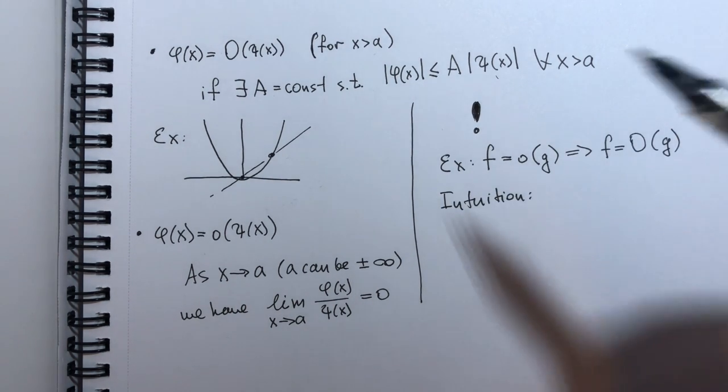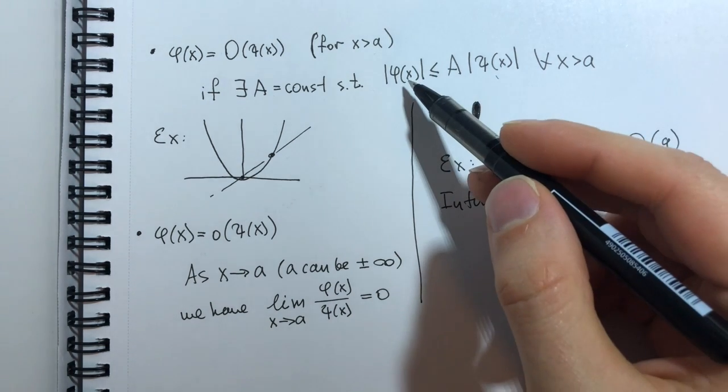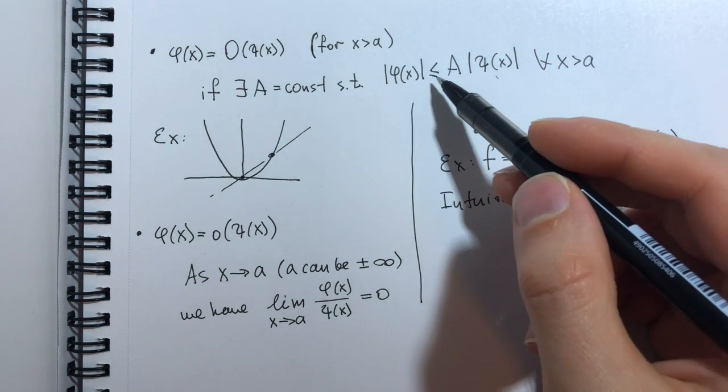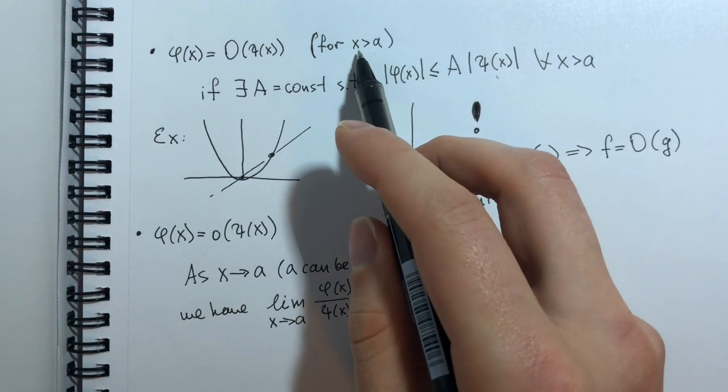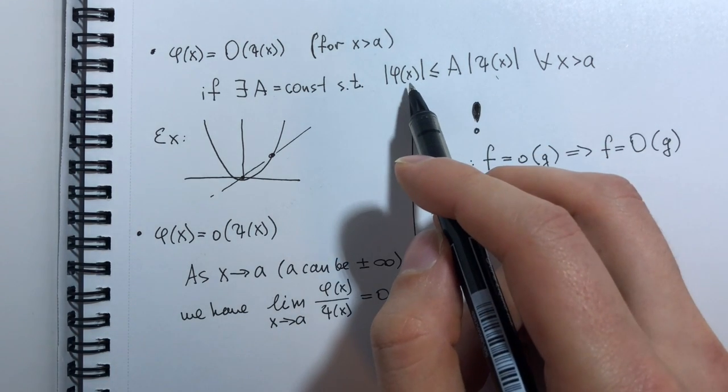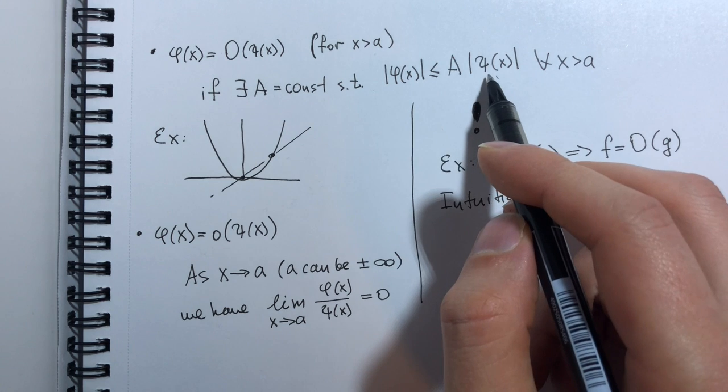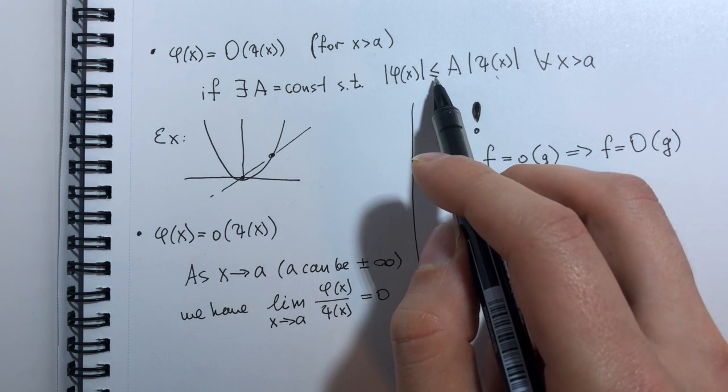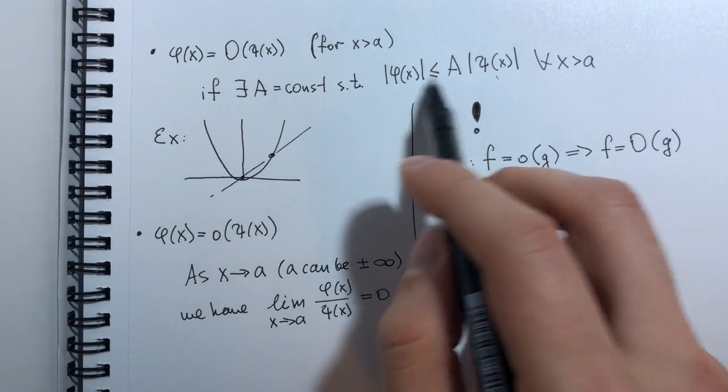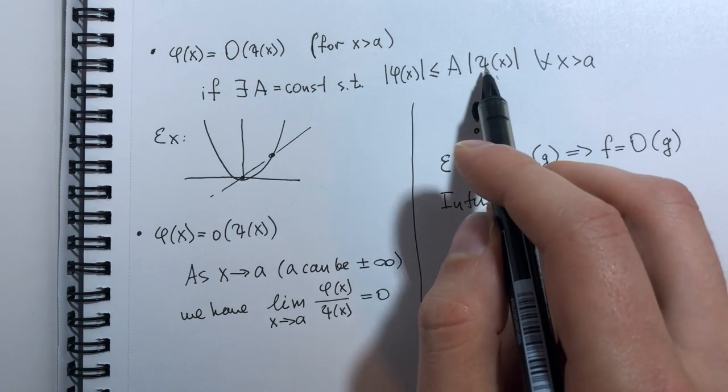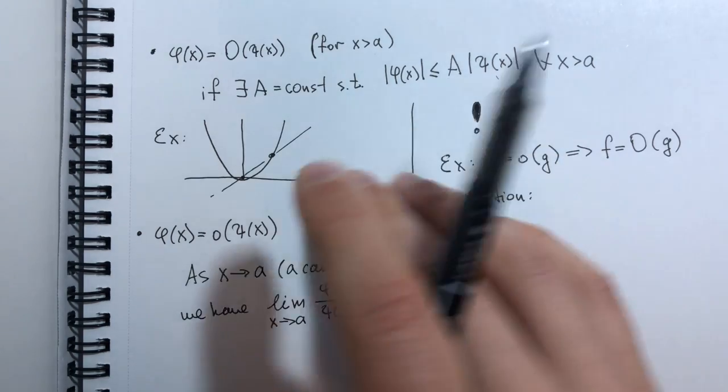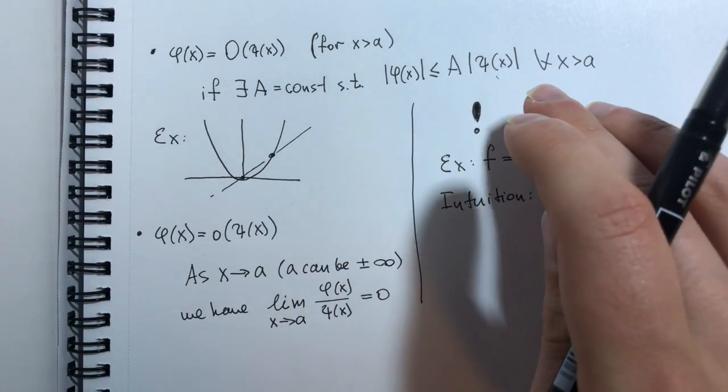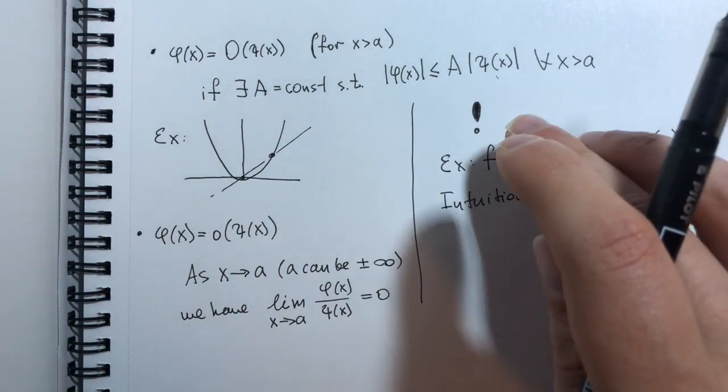What is intuition for these terms? Well with big O, we see that as x increases, phi of x is bounded by xi of x, but we allow equality. So in some sense, phi and xi are allowed to have the same rate of increase, the same order of increase.